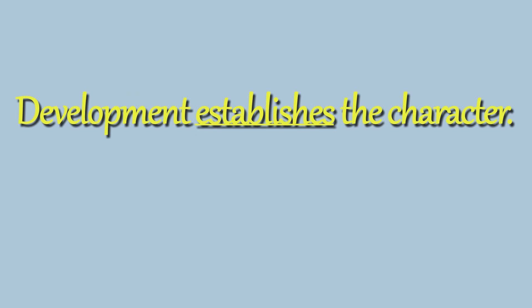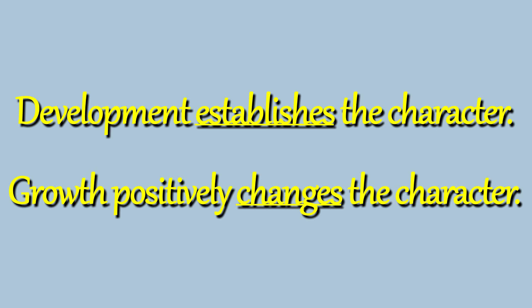To sum up: development reveals — it establishes different dimensions of a character. Who they are, what they can do, what they want or need, and why. Ultimately creating the illusion that the character is a person. Growth is a positive change to one or more of those character dimensions, shown clearly through logical progression. Development can change the audience's perception of a character — once we understand more about them, we have explanation for their behavior and may view them differently. But it is not a change of the character themselves, like it is with growth or decay.